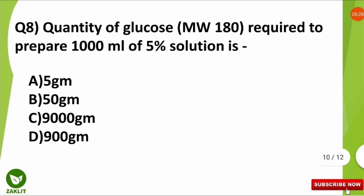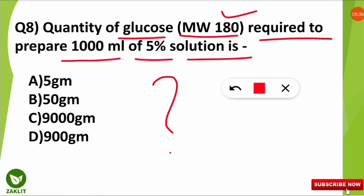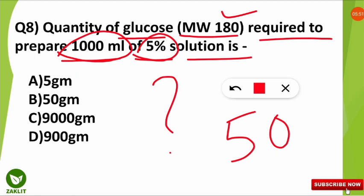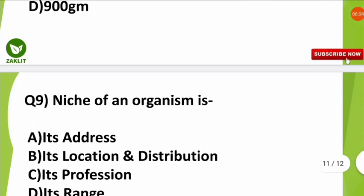The next question was a simple numerical: the quantity of glucose — molecular weight 180 — required to prepare 1000 ml of a 5% solution is how much? It is simple math: find 5% of 1000 ml, which equals 50. So 50 grams of glucose is required to make a 5% solution of 1000 ml. No need for molecular weight or moles — if the concept is clear, you can answer correctly.